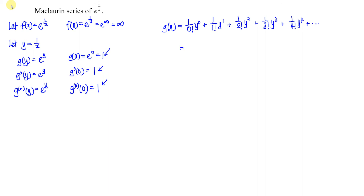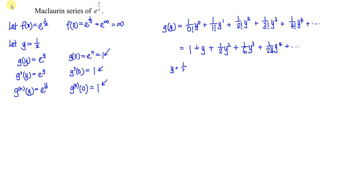Then we simplify. 1 over 0 factorial is 1, and y to the power of 0 is 1, so we obtain 1 plus y plus 1 over 2 y squared, plus 1 over 6 y cubed, plus 1 over 24 y to the power of 4, and so on.